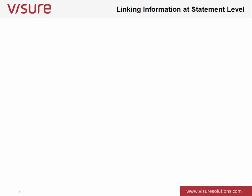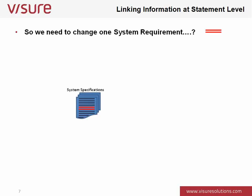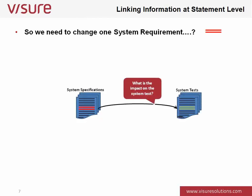We talk about information traceability at statement level inside multiple project documents — not at document level. If one statement needs to change, we need to think about what is impacted or touched by that change. For example, if the system specification says we're going to be changing the colour of a box from red to green, what are we actually now testing for? If no one's told the test engineer they're testing now for a green box, then the test will fail because they're looking for a red box. That's a simple example, but it gives you some idea of the value of traceability.